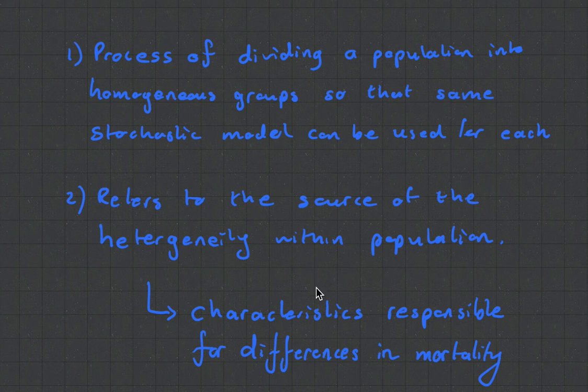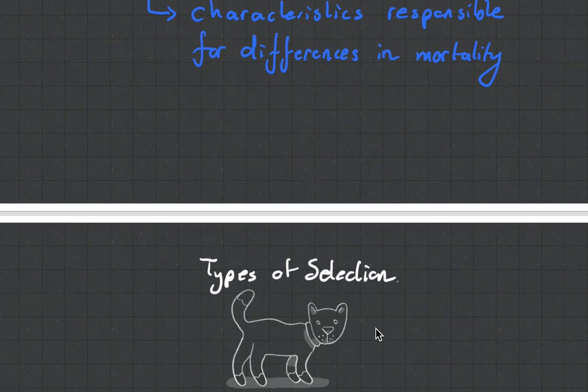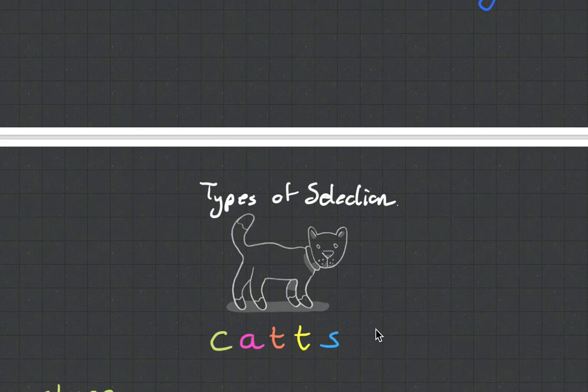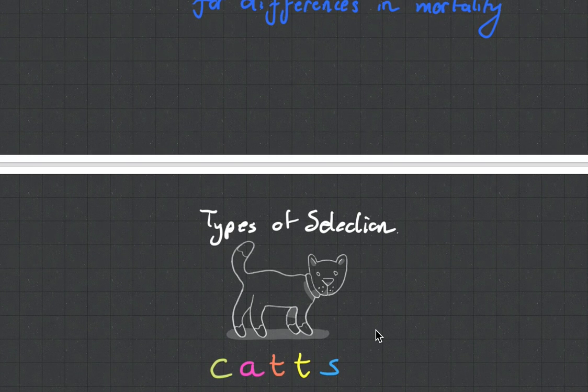And the big basics is what are the types of selection? So, types of selections, I like to refer or remember the five types with this acronym, CATS. And that is class, adverse, temporary, time, and spurious.